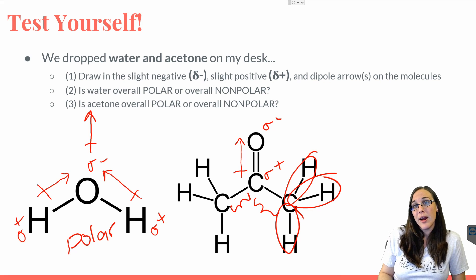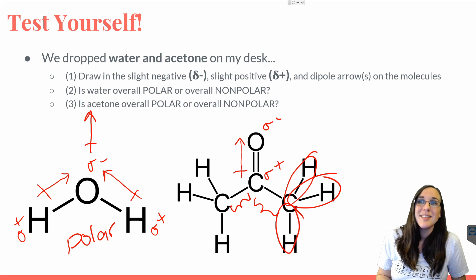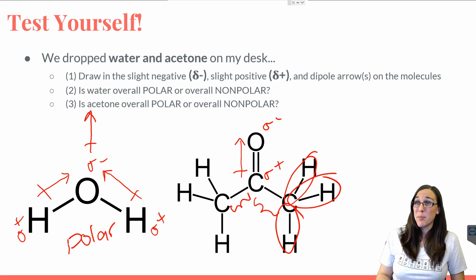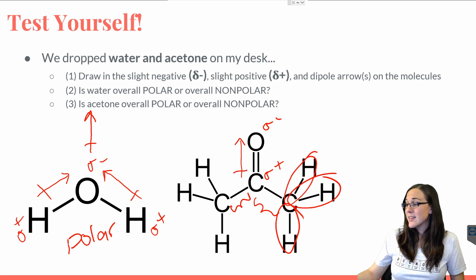We can't draw a dipole arrow for something that has equal sharing of electrons. Therefore, the only dipole arrow we see is this one.